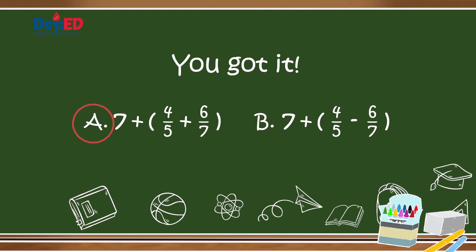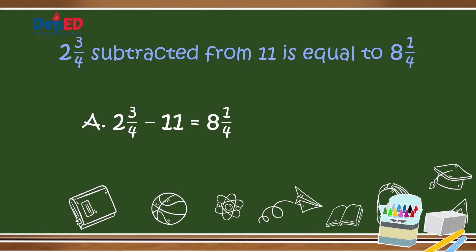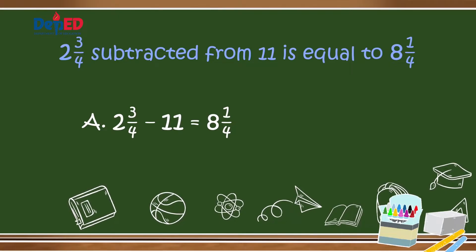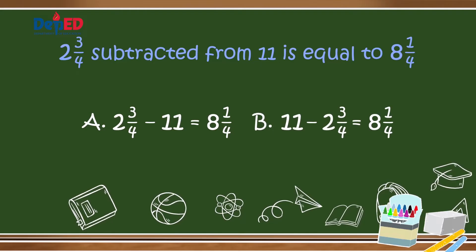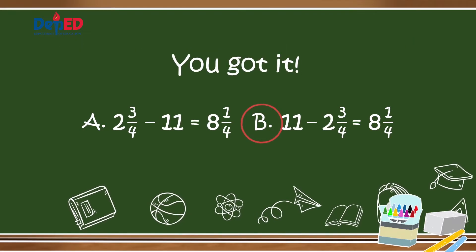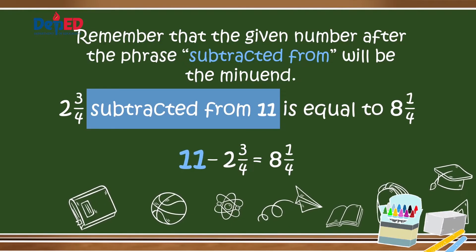Number 2: 2 and 3 fourths subtracted from 11 is equal to 8 and 1 fourths. Is it A: 2 and 3 fourths minus 11 equals 8 and 1 fourths, or B: 11 minus 2 and 3 fourths equals 8 and 1 fourths? You are amazing! It's B. Remember that the number given after the phrase 'subtracted from' will be the minuend.